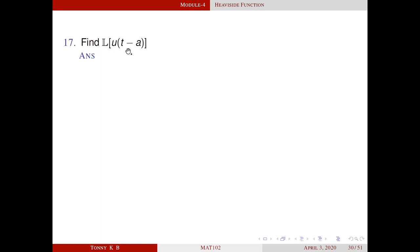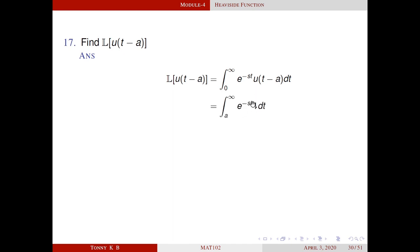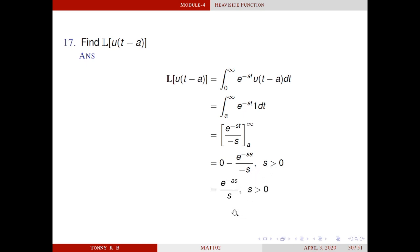Find the Laplace transform of the unit step function u(t − a). By definition, L{u(t − a)} = integral from 0 to infinity of e^(−st) · u(t − a) dt. Since u(t − a) is 0 when t is less than a, this integral becomes the integral from a to infinity of e^(−st) dt. Evaluating, this equals e^(−st)/(−s) from a to infinity. When t = infinity and s is positive, the first part is 0, giving 0 − e^(−sa)/(−s) = e^(−as)/s. So the Laplace transform of the unit step function is e^(−as)/s, where s is positive.